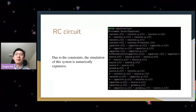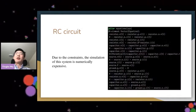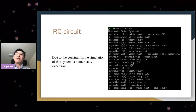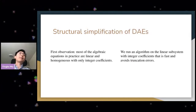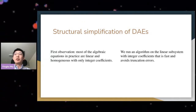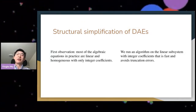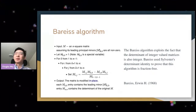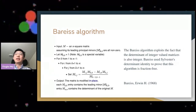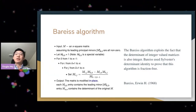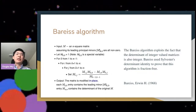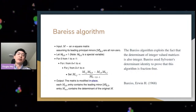Our first observation is that all the algebraic equations are linear with constant coefficients, and most are homogeneous. We need an algorithm that can handle a linear subsystem with integer coefficients quickly and without truncation error — the solution is the Bareiss algorithm. The Bareiss algorithm exploits the fact that the determinant of integer-valued matrices is also an integer, and it is proven to be always fraction-free. Because it's fraction-free, we don't need costly rational arithmetic, and because it's specialized for integers, we get no truncation error — making it ideal for ModelingToolkit.